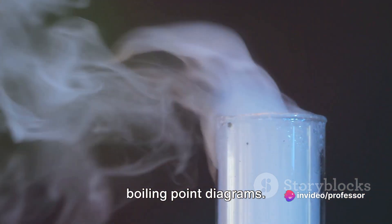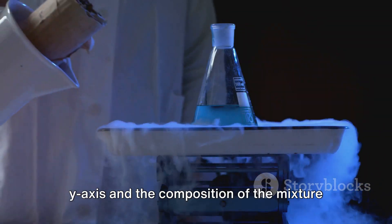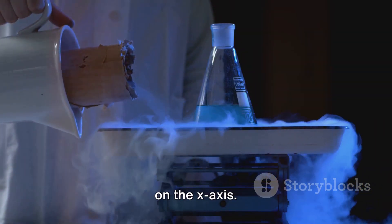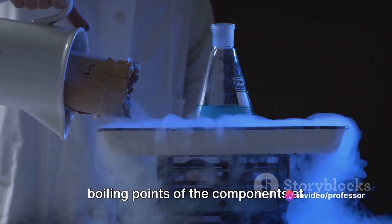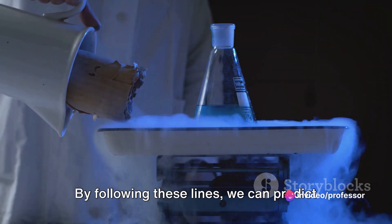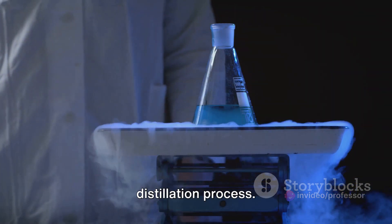Now let's introduce the concept of boiling point diagrams. Imagine a graph with temperature on the y-axis and the composition of the mixture on the x-axis. The lines on this graph represent the boiling points of the components at different concentrations. By following these lines, we can predict and control the outcome of the distillation process.